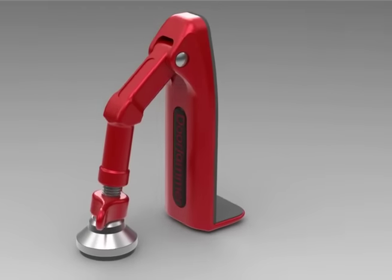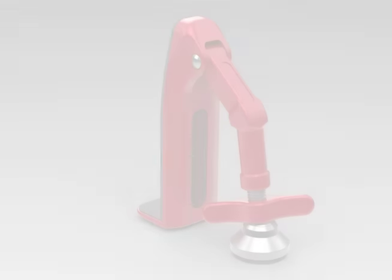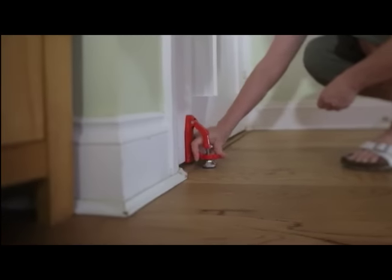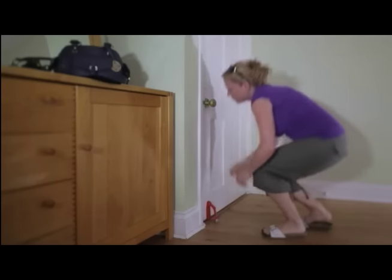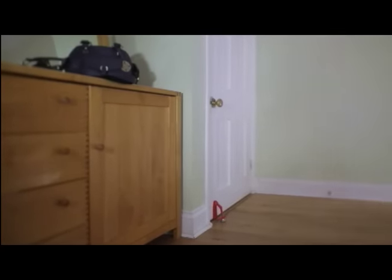The best thing about the Door Jammer is that it's easy to use. Simply insert the bottom flange into the space under the door, twist the bolts until the engagement foot is secured, and your door is jammed shut. With Door Jammer, we can guarantee you'll feel safer.